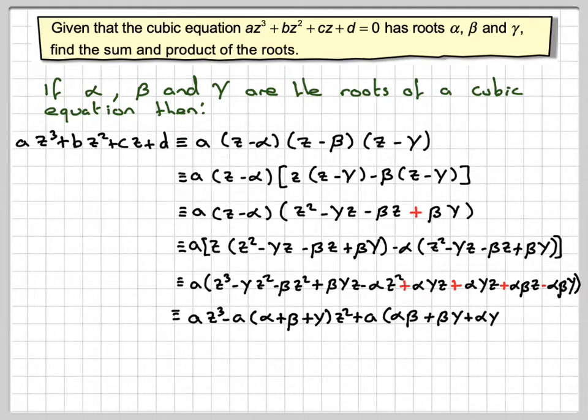And then we get alpha beta z comes from there, beta gamma comes from there, and then alpha gamma comes from there. A lot of books write it gamma alpha. I prefer to do it in sort of alphabetical order.